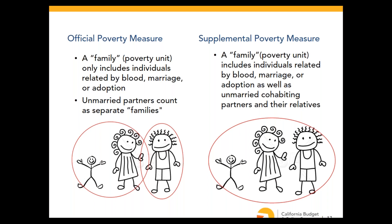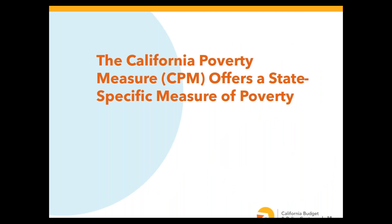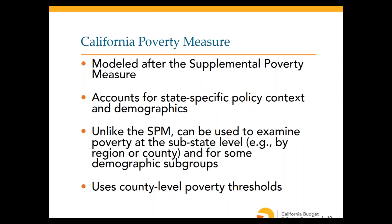The California Poverty Measure is very similar to the Supplemental Poverty Measure but is more specific to California. It was developed by the Stanford Center on Poverty and Inequality and the Public Policy Institute of California as a joint project, and they continue to produce the data each year. The CPM is modeled after the SPM but also accounts for some state-specific policy context and demographics.